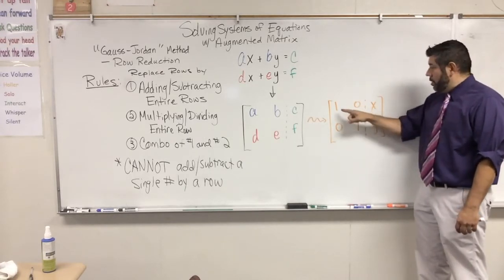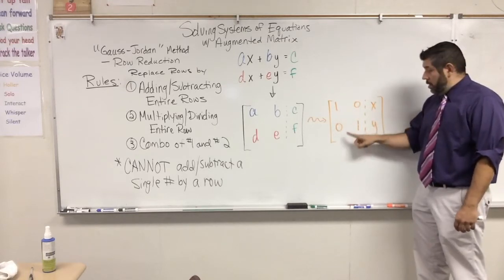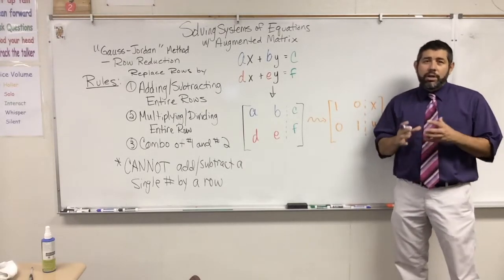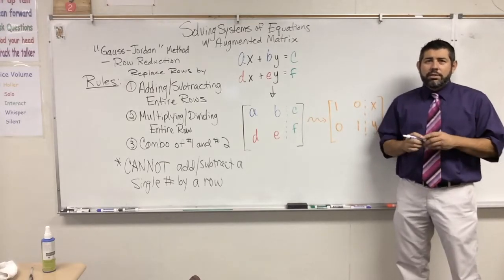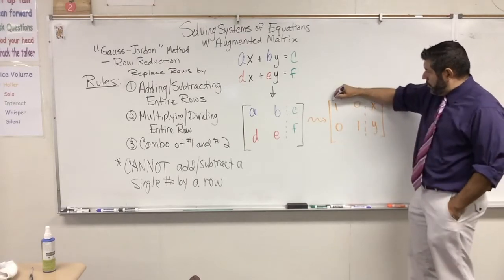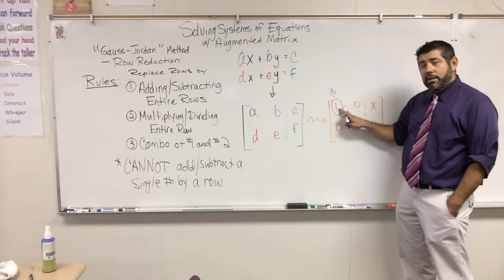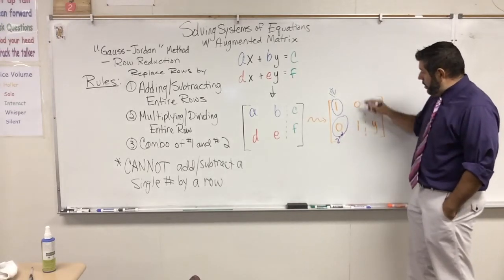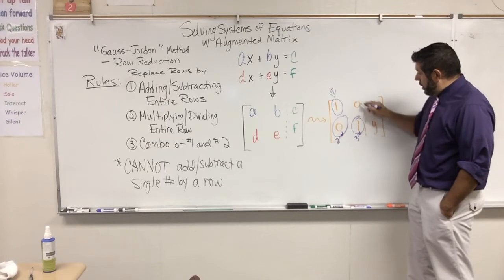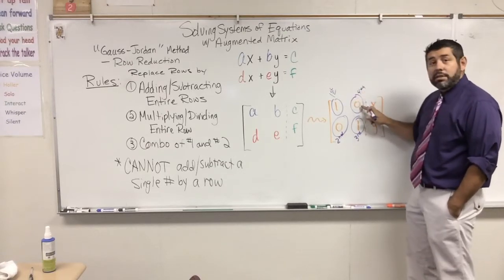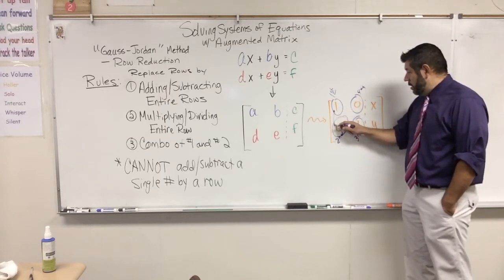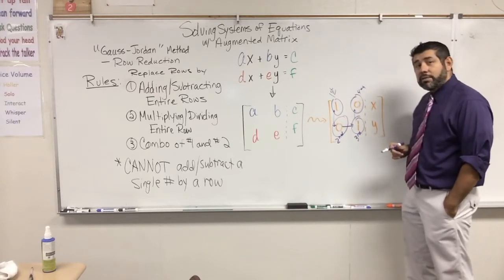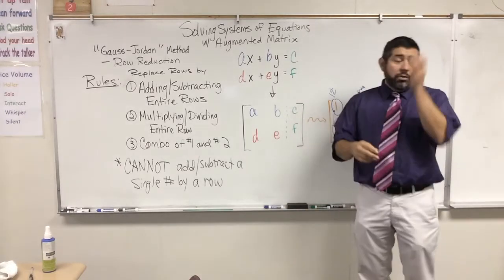We're going to do a series of row operations to get our matrix to become an identity matrix on the left side, which will equal our values of x and y — our solution. So we want a 1 here, a 0, a 0, and a 1. The recommended step order: first get this entry to be a 1, second make this a 0, third make this a 1, and fourth make this a 0. Go this way, then this way.